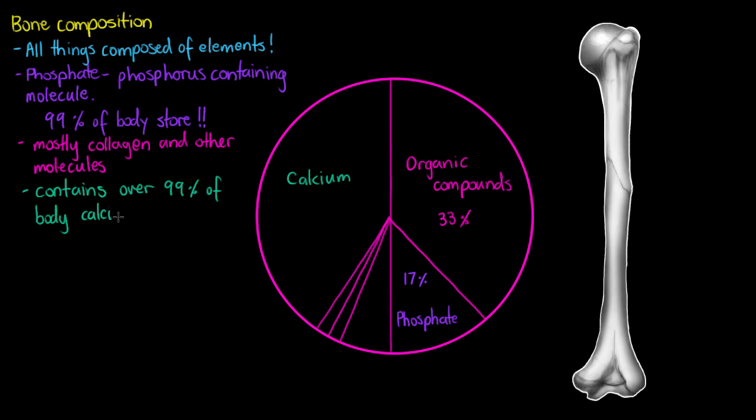In later videos when we start to discuss homeostasis, we will see how the bones play a vital role. Within our bone, 39%, the largest portion, is made up of calcium.